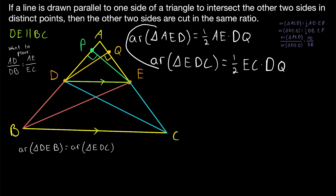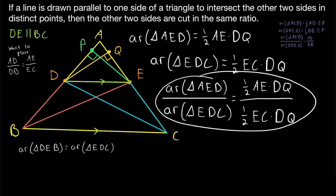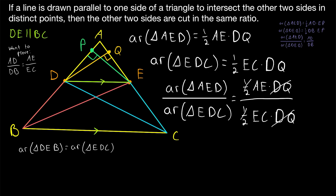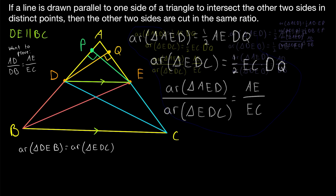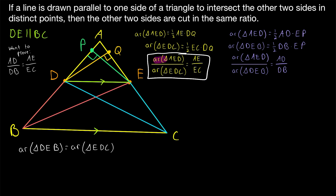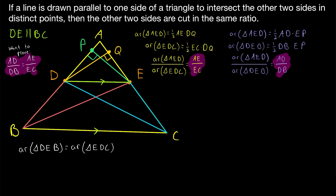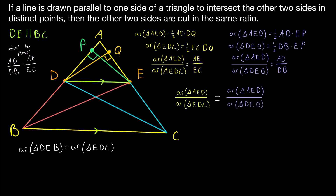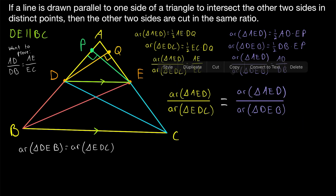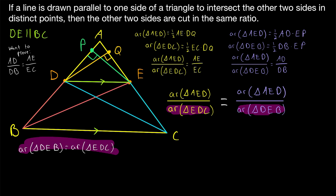Taking the ratio of these two areas, the one-halves cancel and DQ over DQ cancels, leaving AE over EC. Now we have our two results: the ratio of the areas of triangles AED to DEB equals AD over DB, and the ratio of the areas of triangles AED to EDC equals AE over EC. These two ratios of areas must be equal because they share the same numerator — the area of triangle AED — and we established earlier that the area of triangle EDC equals the area of triangle DEB.